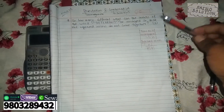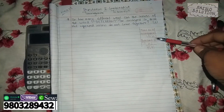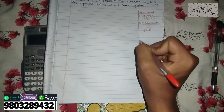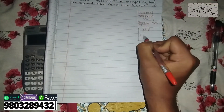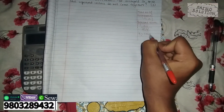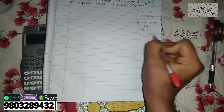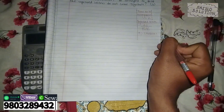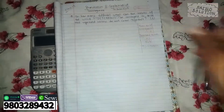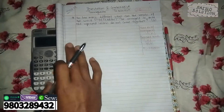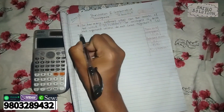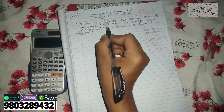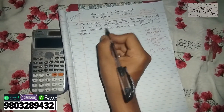The total number of arrangements when letters are repeated follows this simple formula: n factorial divided by the factorials of each repeated group. For example, 5 factorial equals 5 × 4 × 3 × 2 × 1. You multiply these out to get the answer. This is how you understand and answer this type of question.